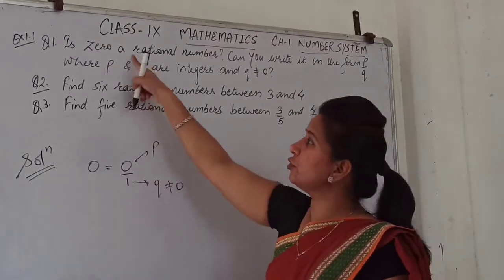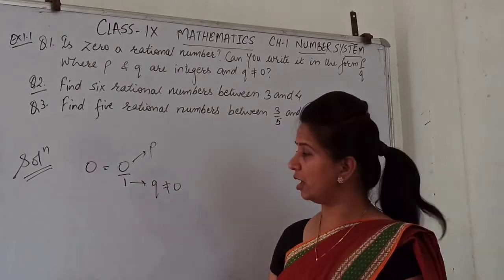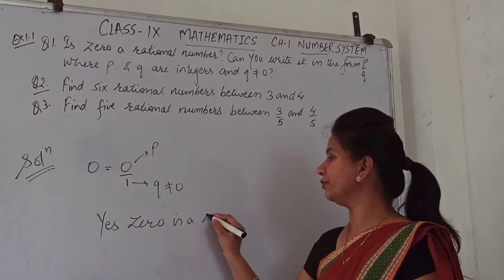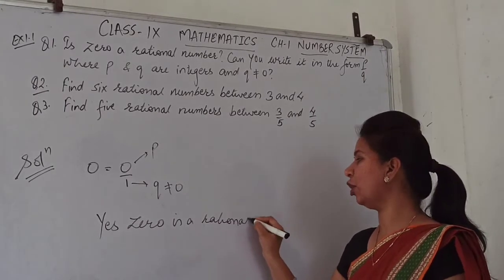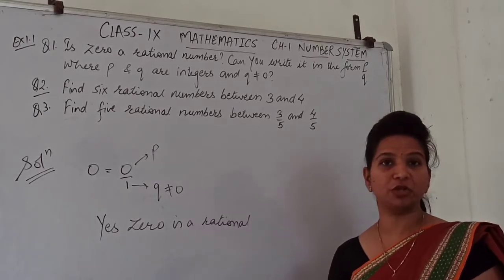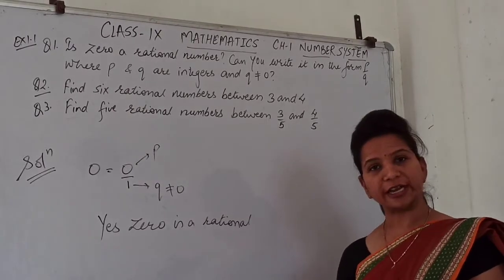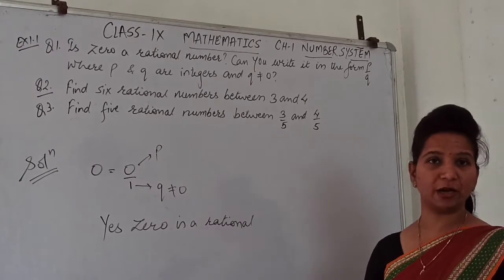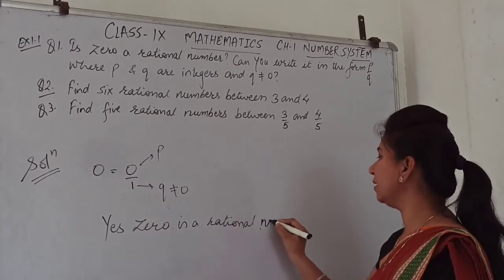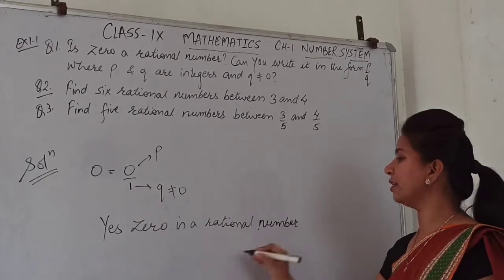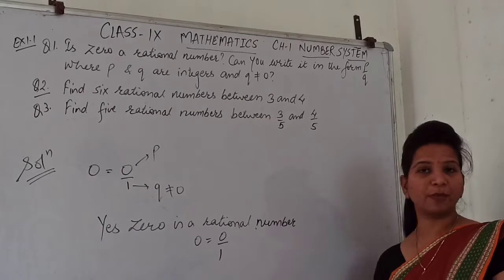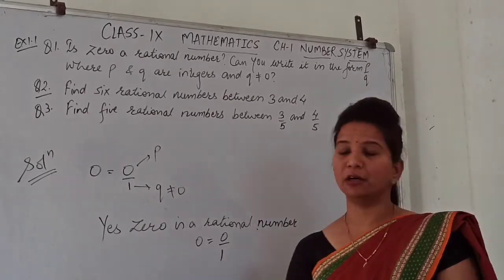So the first question is: Is zero a rational number? The answer is yes, 0 is a rational number. 0 is a whole number, and all whole numbers are rational numbers. 0 is an integer, and all integers are rational numbers. So 0 is a rational number and we can write 0 as 0 upon 1. This is the answer to the first question. Now moving to question number 2 and 3.